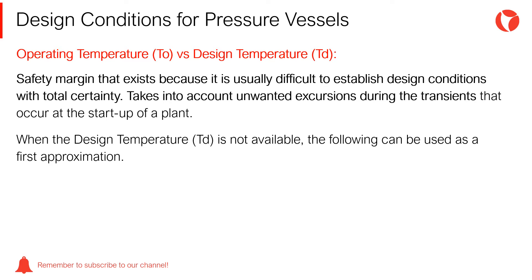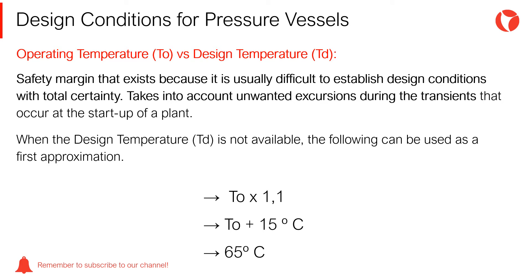The difference between the operating temperature TO and the design temperature TD is a safety margin that exists because it is usually difficult to establish design conditions without total certainty. This difference takes into account unwanted excursions during the transients that occur at the startup of a plant. When the design temperature TD is not available, the following can be used as a first approximation: TO plus 10%, or TO plus 15°C, or 65°C as a minimum.